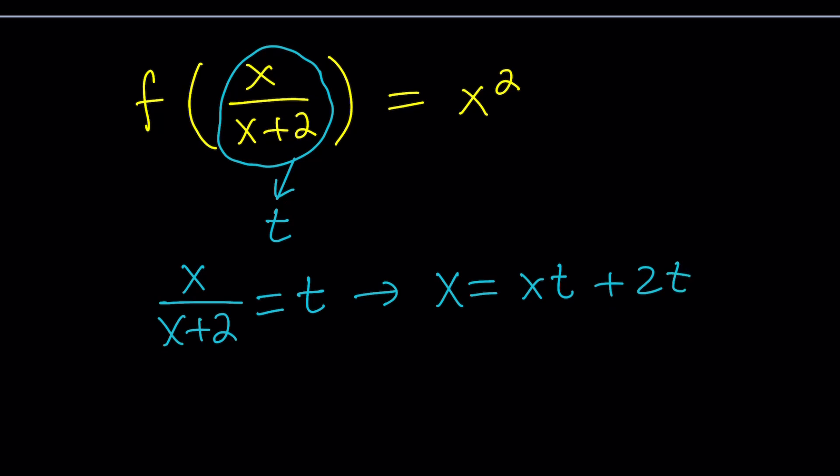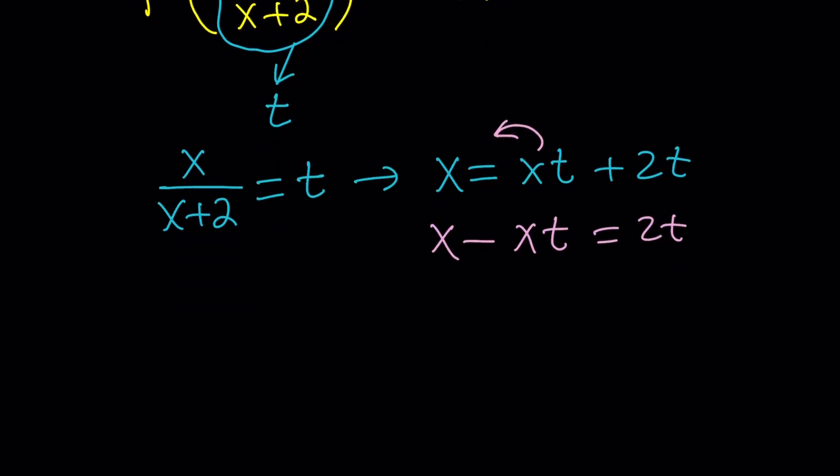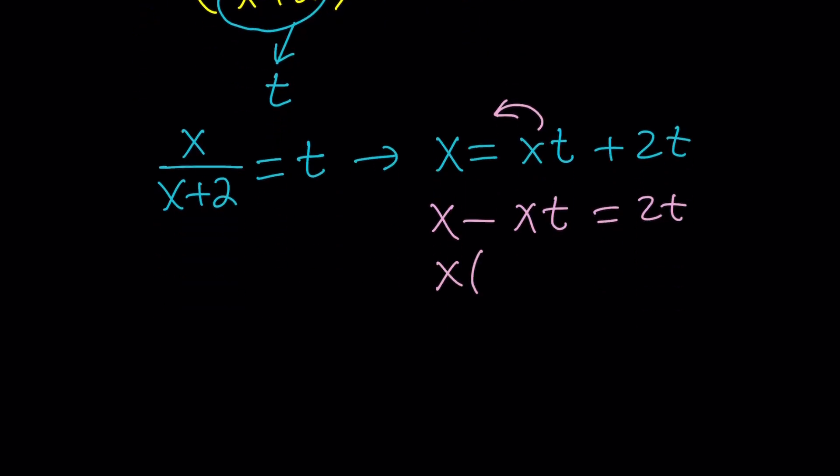And then we're going to go ahead and put the x's together. Subtract x t. And then our goal is to solve for x. Remember, take out x factor 1 minus t equals 2t. And then finally divide by 1 minus t.